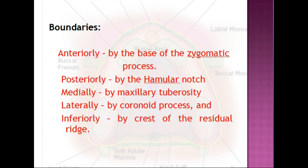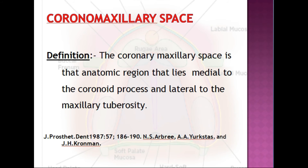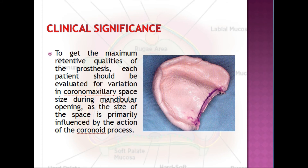The boundaries of the hamular notch are: anteriorly, the base of the zygomatic process; posteriorly, the hamular notch; medially, the maxillary tuberosity; laterally, the coronoid process; and inferiorly, the crest of the residual ridge. The next structure is the coronomaxillary space — an anatomic region that lies medial to the coronoid process and lateral to the maxillary tuberosity. To get maximum retentive qualities, each patient should be evaluated for variation in coronomaxillary space size during mandibular opening.